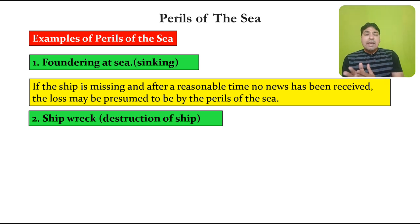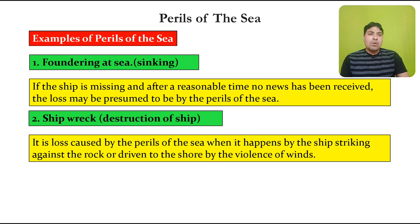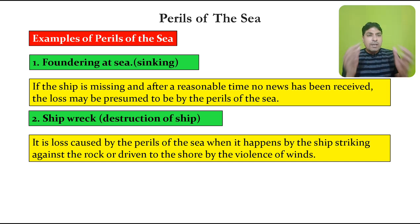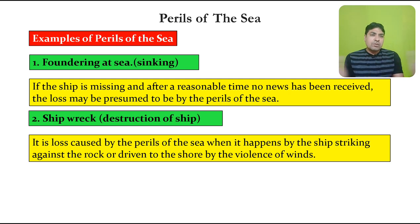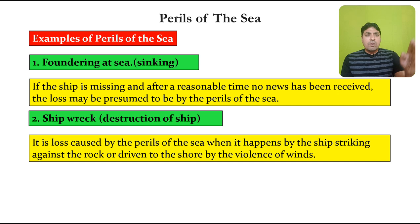The second example of perils of the sea is ship wreck — the destruction of the ship. It is loss caused by perils of the sea when it happens by the ship striking against a rock or being driven to the shore by the violence of winds. Due to the violent act of winds and waves, if the ship strikes a rock or is driven to the shore and is thereby destroyed, the policy holder is entitled to claim such a loss from the insurance company.